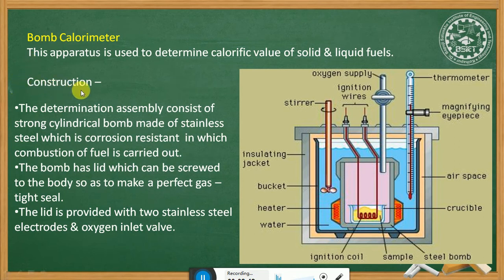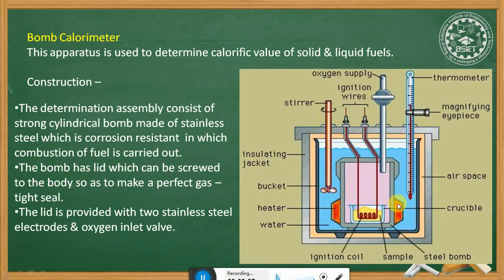First, we will see the construction of the bomb calorimeter. The determination assembly consists of a strong cylindrical bomb made up of stainless steel, which is corrosion resistant, in which combustion of the fuel is carried out. The bomb has a lid which can be screwed to the bottom so as to make a perfect gas-tight seal.